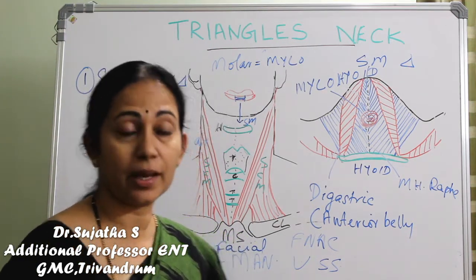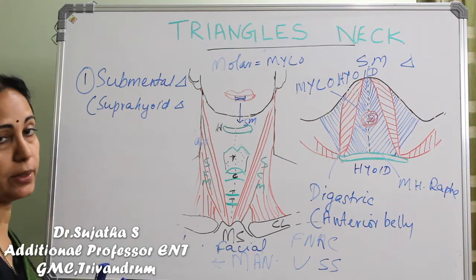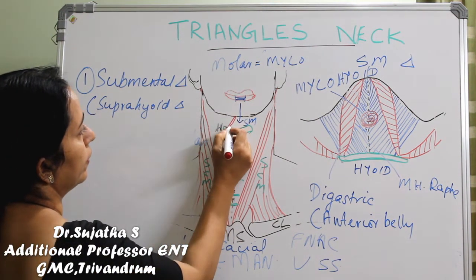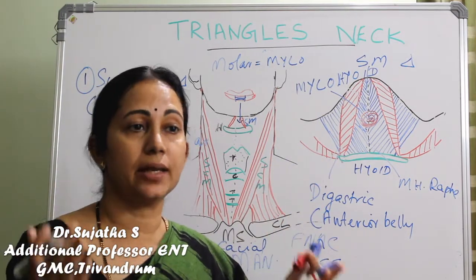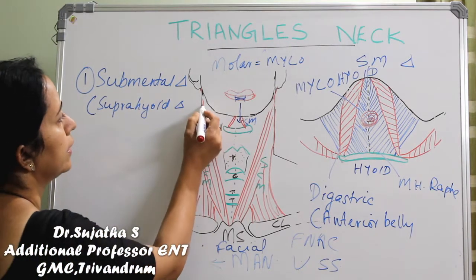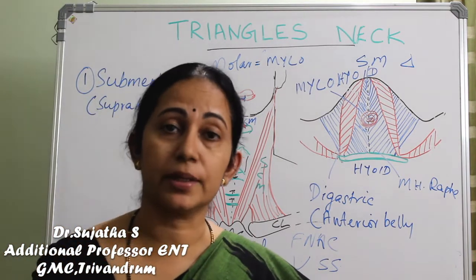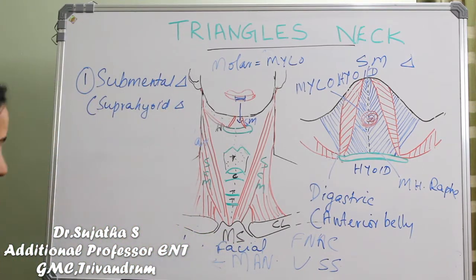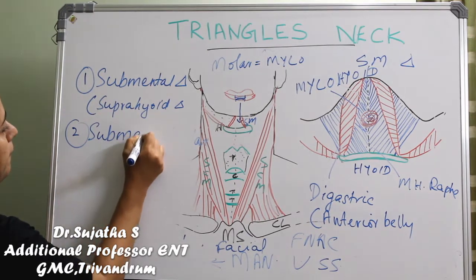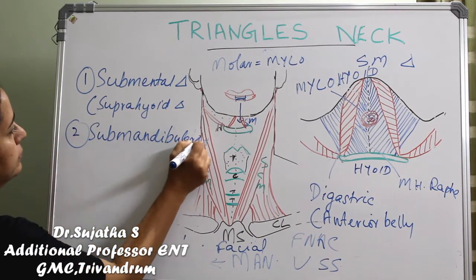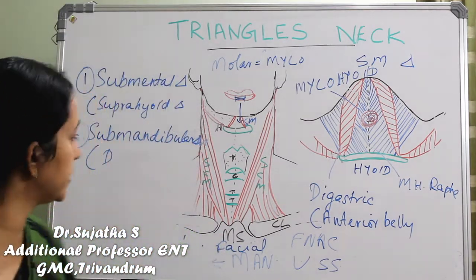We now know the location, boundaries, and contents of the submental triangle, which lies between the two anterior bellies of the digastric muscle. Lateral to the anterior belly of digastric, between the anterior and posterior bellies, comes the submandibular triangle — also a very important triangle in the anterior compartment of the neck. It is otherwise called the digastric triangle.